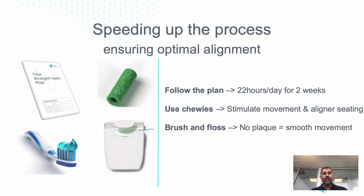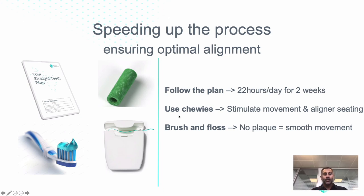To speed up and optimize your alignment, there are three main things to do. First, follow the plan — wear each customized aligner for 22 hours a day for two weeks before switching to the next. In some cases with a slow biological response, your dentist might advise wearing it longer. Second, use chewies — these ensure the aligners seat fully and stimulate movement. Third, brush and floss — no plaque means smooth movement and the teeth can align very nicely.